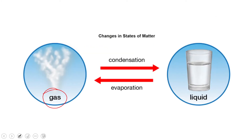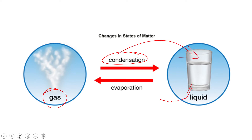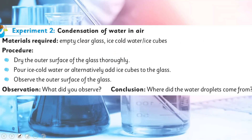When gas releases energy and slows down, this is called condensation — it changes into water. When liquid gains energy at a very high temperature, it turns into gas. So now let's do the experiment: condensation of water in air.